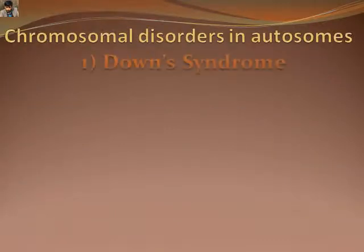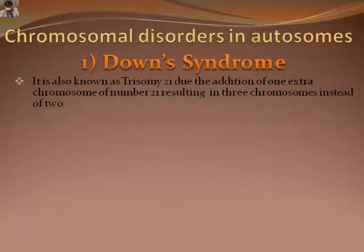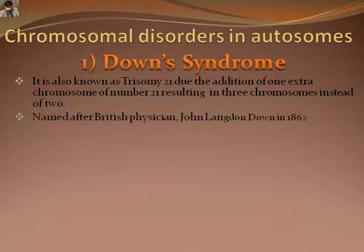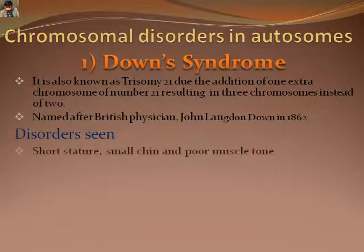Among the different disorders shown in autosomes, Down syndrome is the most common one. It is also known as trisomy 21, due to 3 chromosomes at chromosome number 21 instead of 2. Some of the disorders observed in a person with Down syndrome are short stature, small chin, mental and physical weakness, thyroid problems, and shorter lifespan.